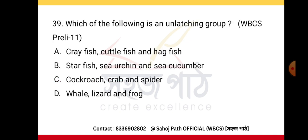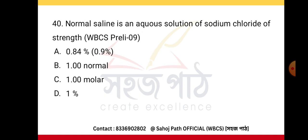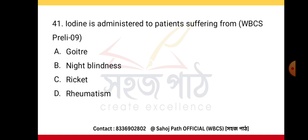The essential constituent carbohydrate of the plant cell is starch. The echinoderm group includes starfish, sea urchin, and sea cucumber. Normal saline is an aqueous solution of sodium chloride of strength 0.84%. Iodine is administered to patients suffering from goiter.